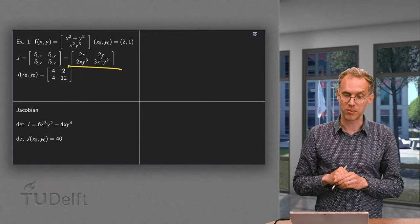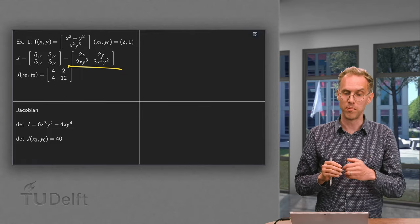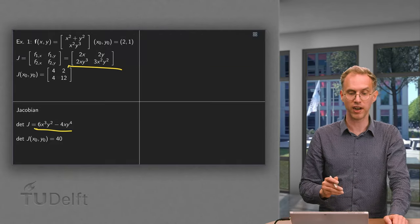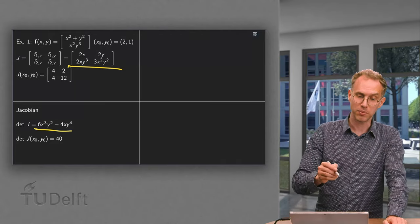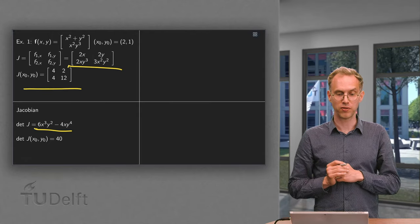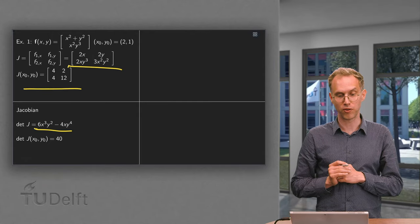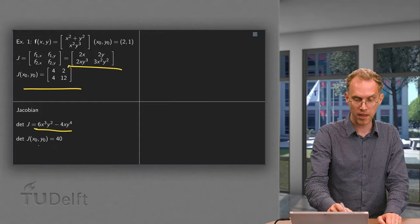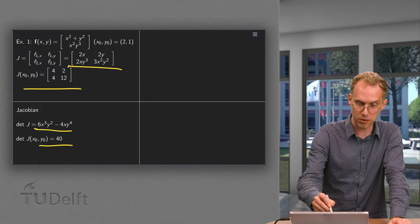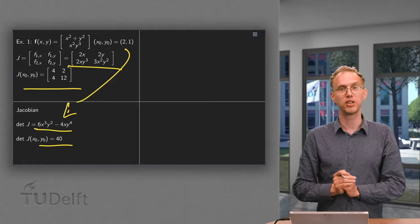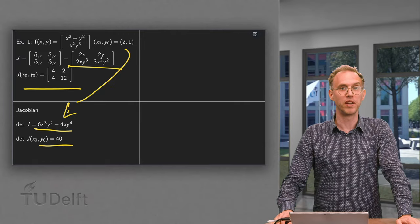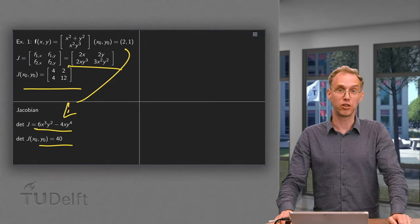The general Jacobian is the determinant of the Jacobi matrix: 2x times 3x²y² minus 2y times 2xy³, which simplifies to the general expression. The Jacobian at the particular point is then 4 times 12 equals 48, minus 2 times 4 equals 8, giving 40. You could also find the Jacobian at a point by plugging the point into the general expression. This is the Jacobian matrix and how you compute the Jacobian.